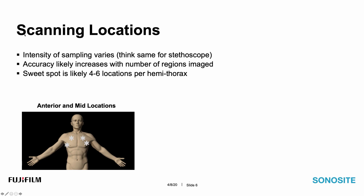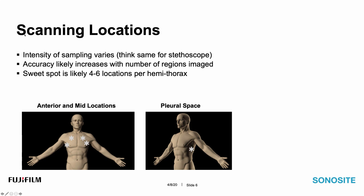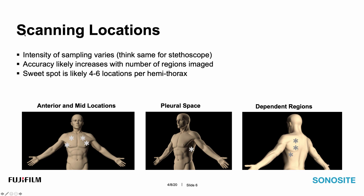The anterior and mid locations — corresponding to the upper lobe and middle lobe or lingula on the left — are ideal for finding A versus B line patterns. You then move into the pleural space views, typically in the mid or posterior axillary line, imaging the diaphragm and pleural space. This is where you need depth that you don't have on a linear transducer. For bed-bound patients, the fourth spot — akin to the PLAPS point — finds dependent pathology. If the patient is prone or able to sit up, you can also gather information from the posterior aspects of the lung.